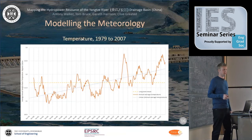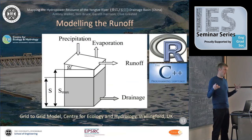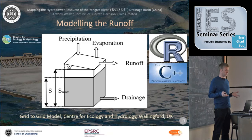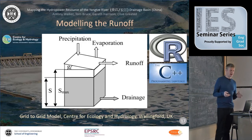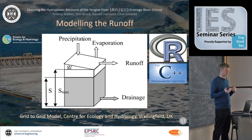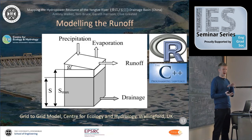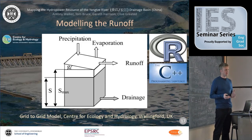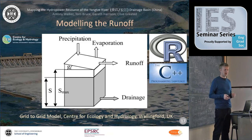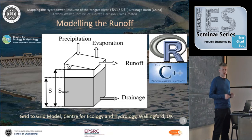We stitch all this together in a model developed by the Centre for Ecology and Hydrology called grid-to-grid. We look at precipitation and evapotranspiration, a certain amount goes into the soil, and if that's exceeded it runs off to the next cell. This is implemented using R and C++, representing the Yangtze catchment with about 200 million cells, simulating how water flows over that landscape every few minutes.